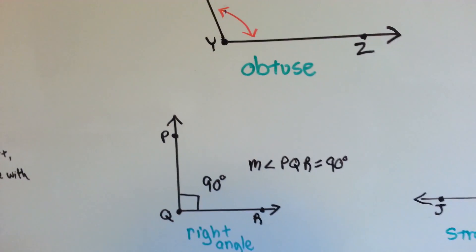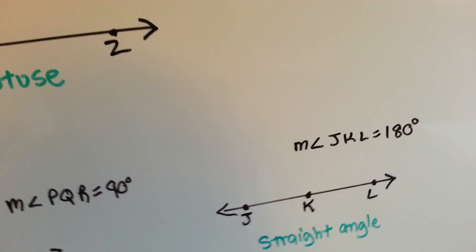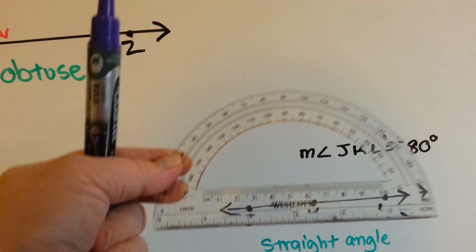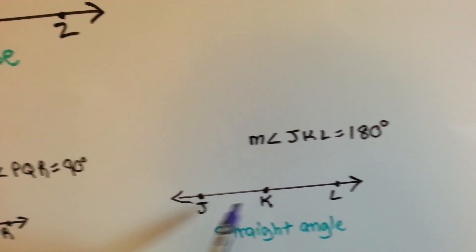A right angle is 90 degrees. And then here's a straight angle. It just goes straight across the bottom of this. It's 180.